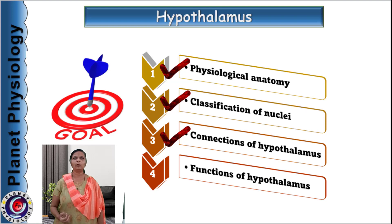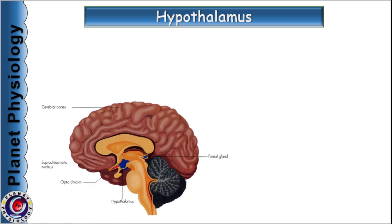Let us start with the physiological anatomy of hypothalamus. Hypothalamus occupies only 4 cubic centimeter volume of the neural tissue, which accounts for just 0.3% of the total brain. This small blue color shaded area represents hypothalamus. Even though it is a minute region, hypothalamus plays a vital role in regulation of various body systems.